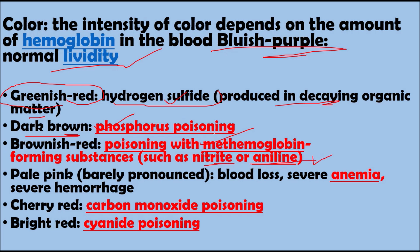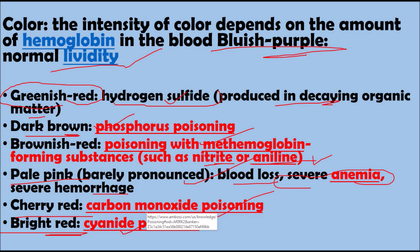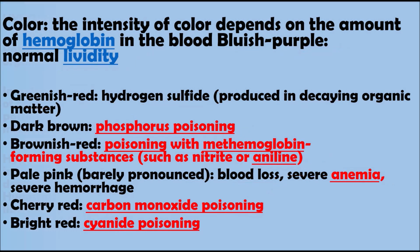Lividity is barely visible or pale pink in cases of severe blood loss, severe hemorrhage, or severe anemia. Cherry-red lividity is seen in carbon monoxide poisoning, and bright red in cyanide poisoning. These color variations in lividity are very important for diagnosing the cause of death.